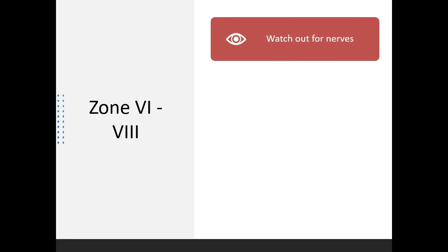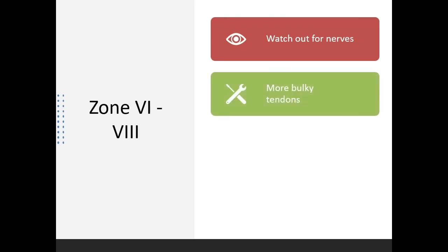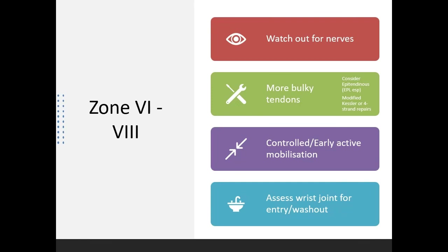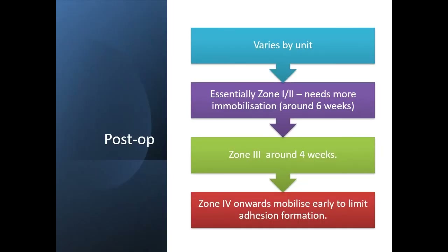When you get more proximal, watch out for those pesky nerves — especially in zones six and seven, superficial branch of radial nerve neuromas are very difficult to treat. You have bulkier tendons and I sometimes add an epitendinous suture on a chunky EPL tendon. Therapy is more aggressive in these zones and you want patients mobilizing sooner. In zone seven, remember to assess the wrist joint for breaches and the need for a washout. Therapy regimes vary by unit — find out what your unit does for the various zones, as it really helps with patient compliance if you give them a rough idea of what to expect pre-op, and the therapist can reinforce it post-op. Essentially, the more distal you are, the more immobilization you need.